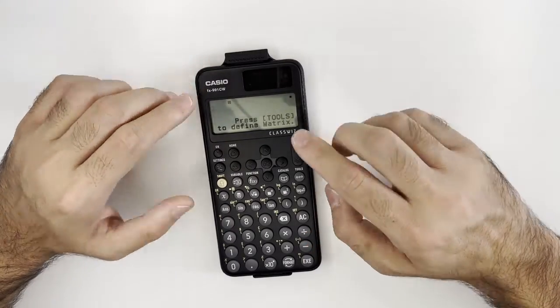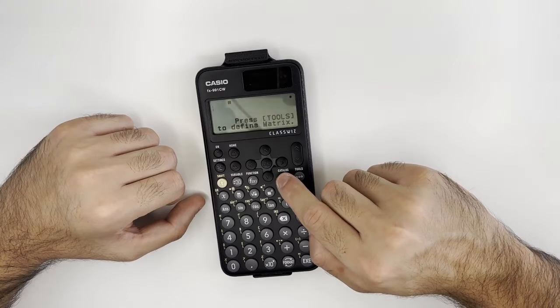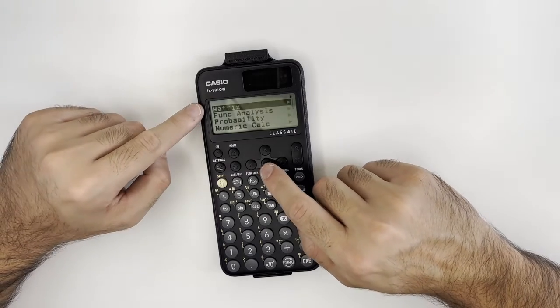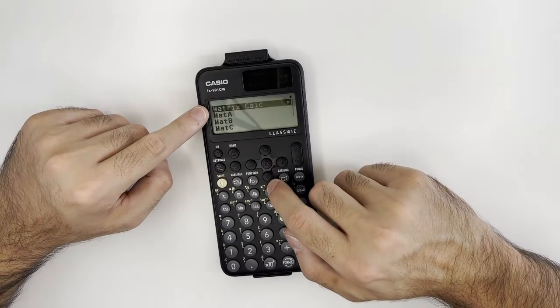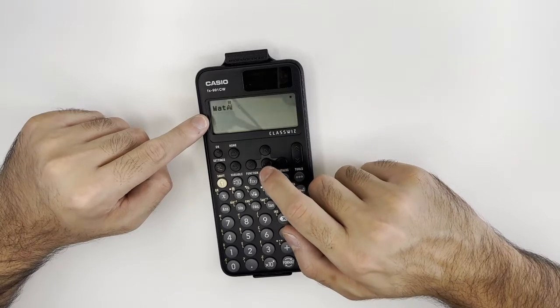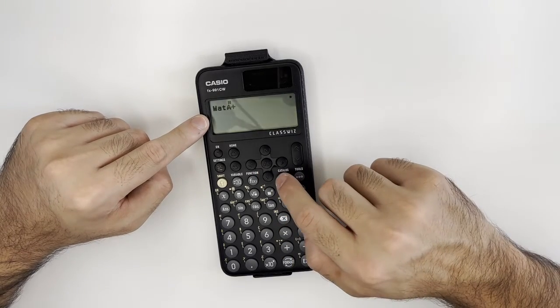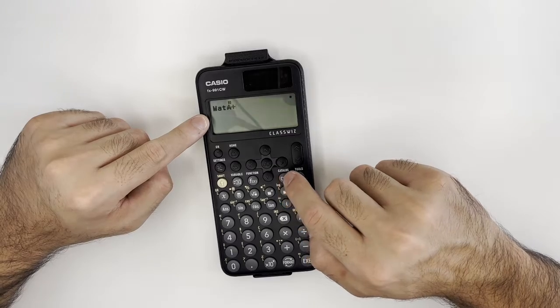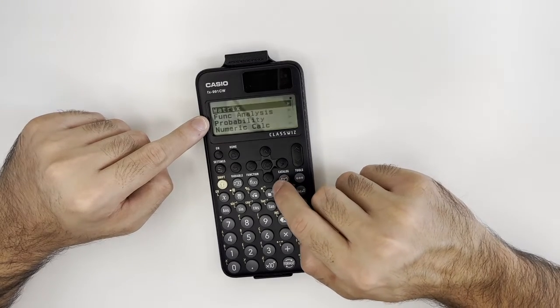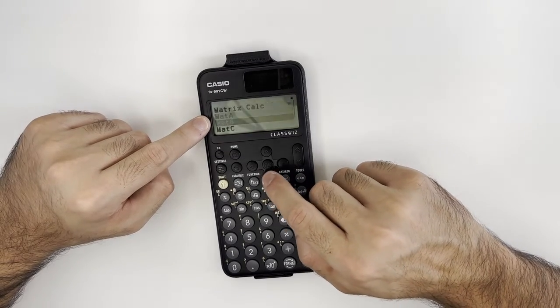By simply pressing the Catalog button, you choose the matrix option. Let's choose matrix A, for example, and let's add it to matrix B. To also choose matrix B, we press the Catalog function, Matrix, and choose matrix B.